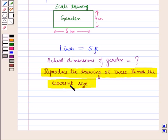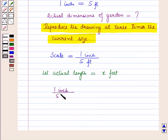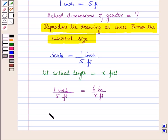Here 1 inch equals 5 feet, meaning the scale equals drawing dimension (1 inch) upon actual dimension (5 feet). Let the actual length of the garden be x feet. The length of the garden in the drawing is 6 inches. Using the scale: 1 inch / 5 feet = 6 inches / x feet, which gives x = 6 × 5 = 30 feet.